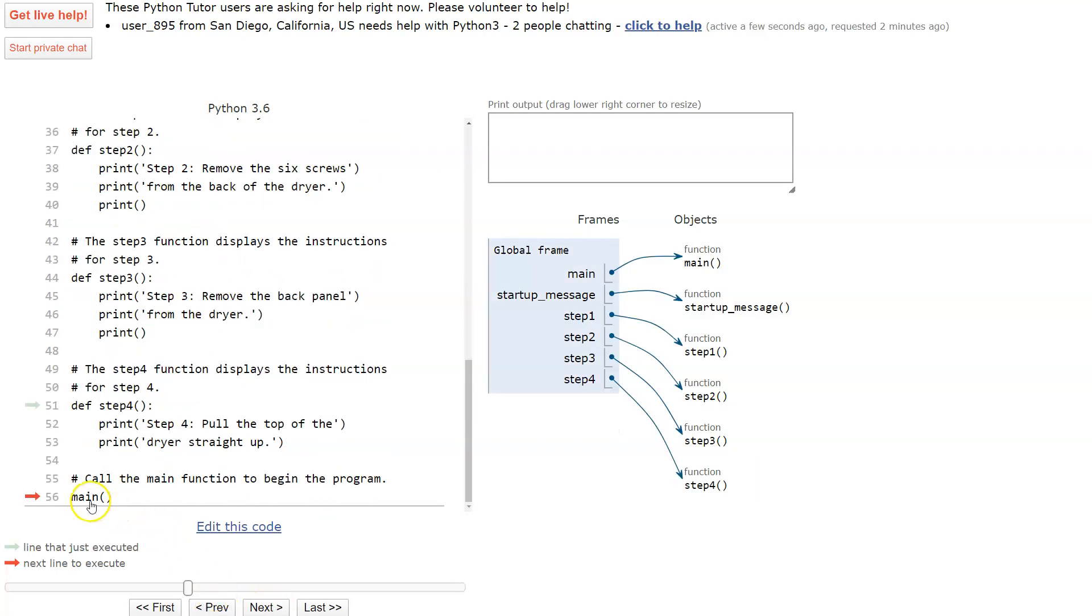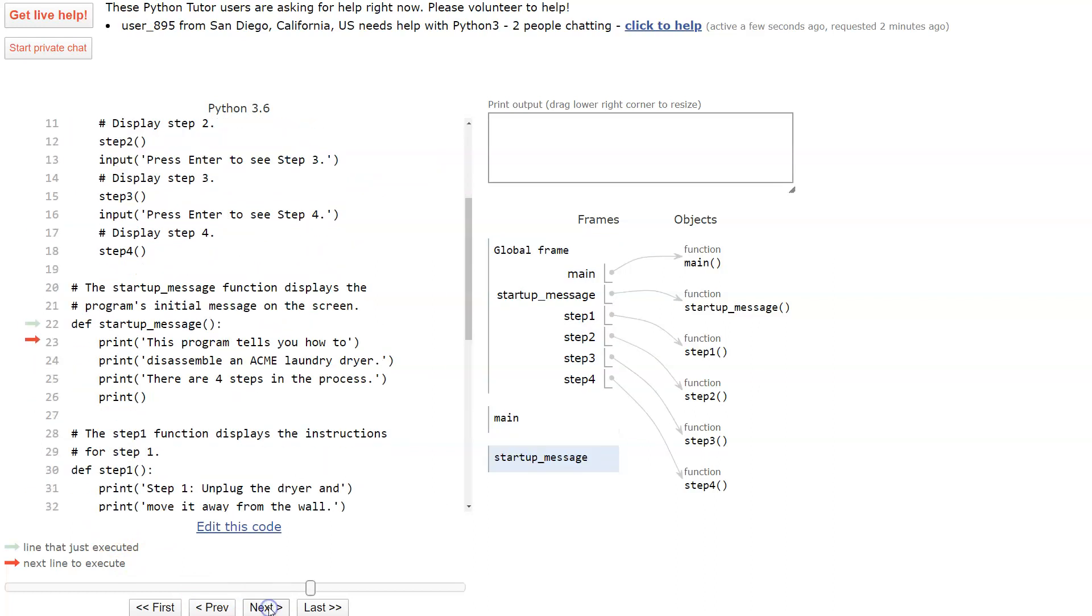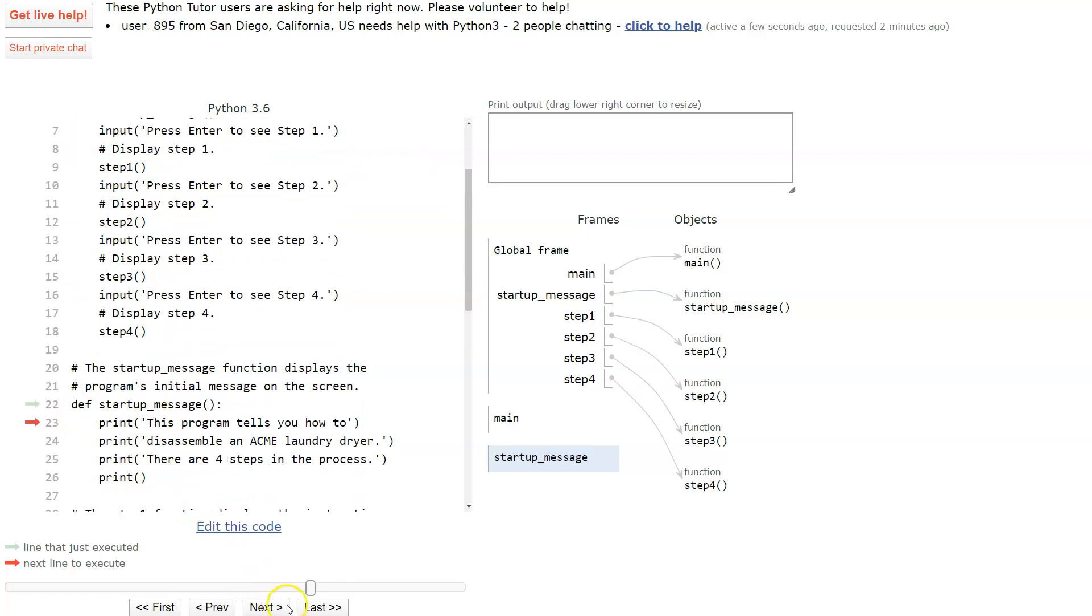So one through four and then it goes ahead and runs main here. And now it will actually step through and you saw the call up here, startup message, so it goes to startup message and now it's walking through and it will print those out.